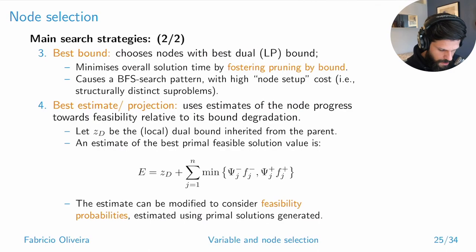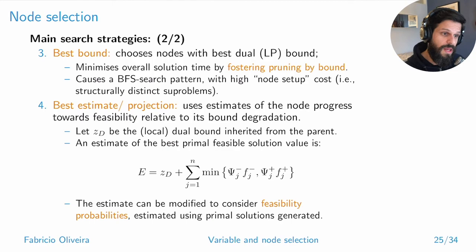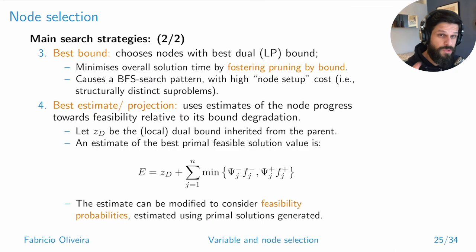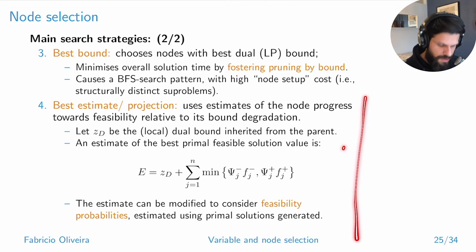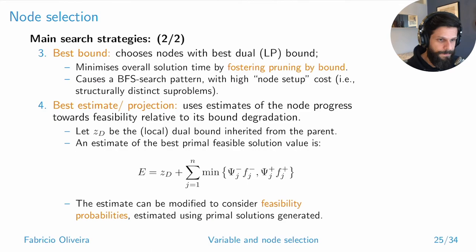You can also adjust this to take into account feasibility probability — not just the estimated primal value but also how likely that solution actually is to be primal feasible, calculated based on non-primal-feasible solutions observed so far. This gives an idea of where these estimate-based node selection ideas come from, though in practice they are more sophisticated.